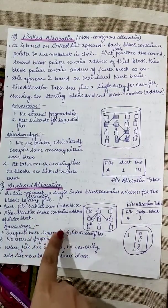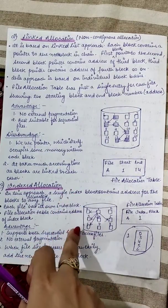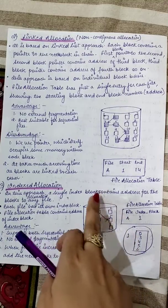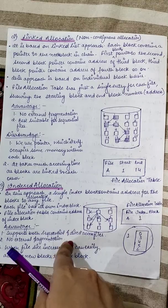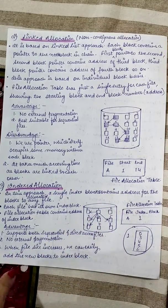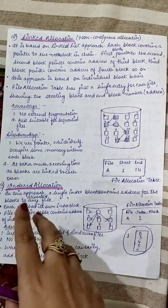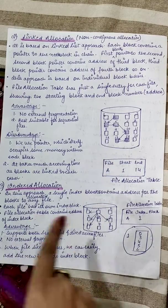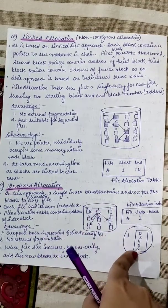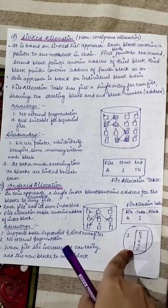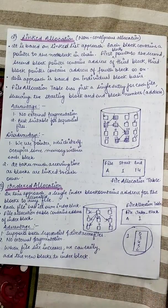Advantages of indexed allocation: it supports both sequential and direct access. For direct access, if you want block 6, there is a direct link from the index block to block 6. There is no external fragmentation since continuous blocks are not required. When file size increases, new blocks can easily be added by updating the index block — for example, adding blocks 7 and 8 to file A simply means adding links to 7 and 8 in the index block.